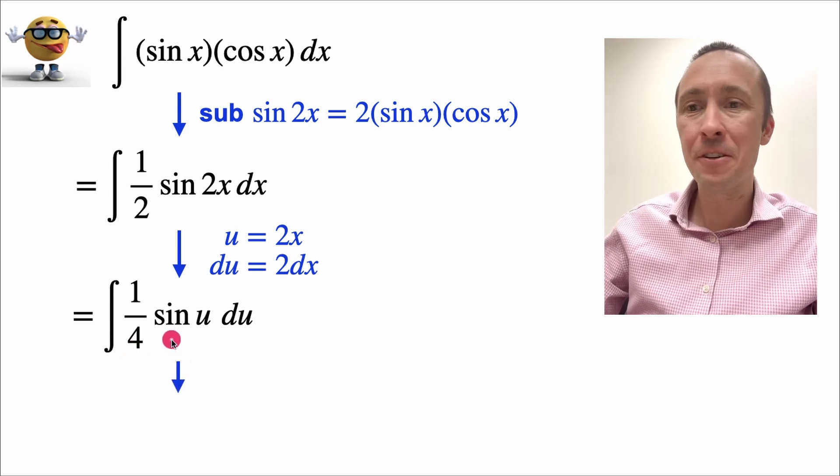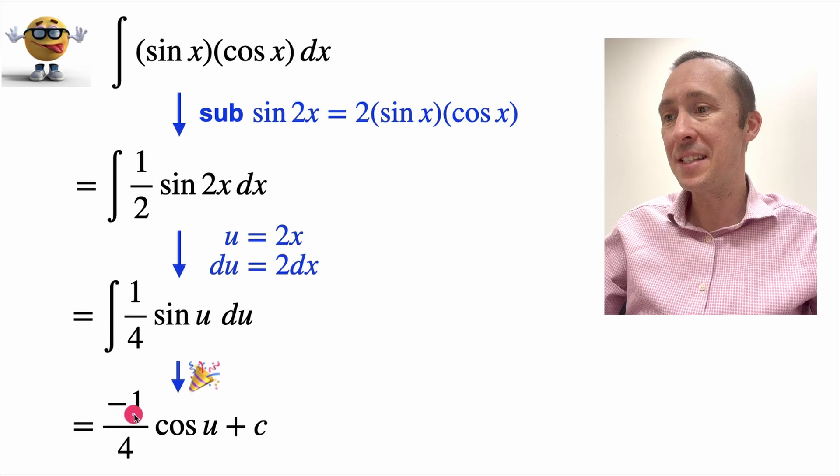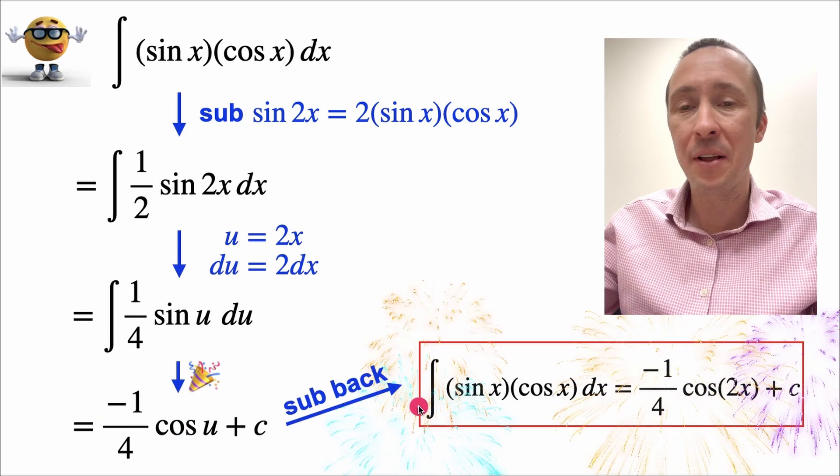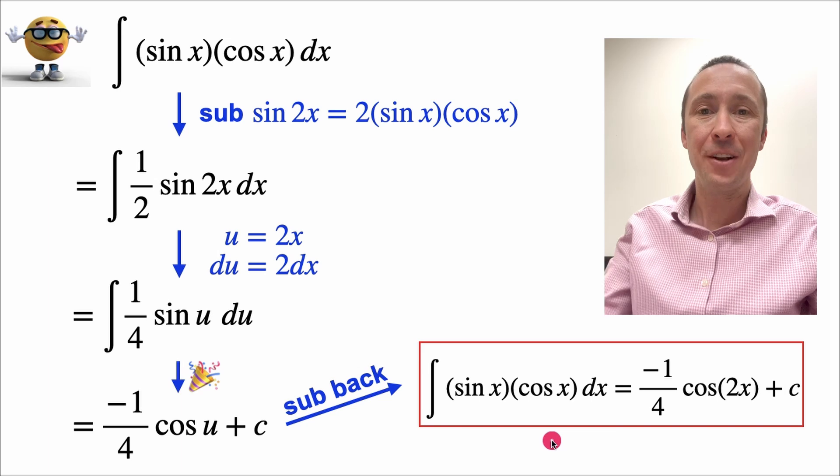So at this point we can take the integral. The integral of sine u is negative cos u, and we'll substitute back because we want things in terms of x. And this is it in all its glory.